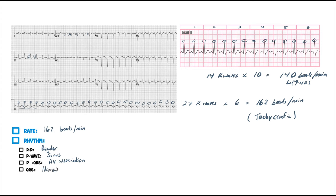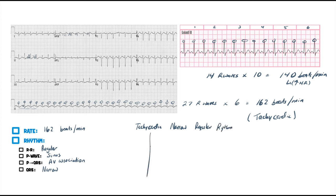So what do I have from this one? I know that it's sinus rhythm but I know it's fast. Am I 100% positive this couldn't be SVT or atrial flutter? No — it could be. Remember, those are the three differentials. Whenever somebody is tachycardic and has a narrow regular rhythm — three things I want you to think about: sinus tach, SVT, and atrial flutter.